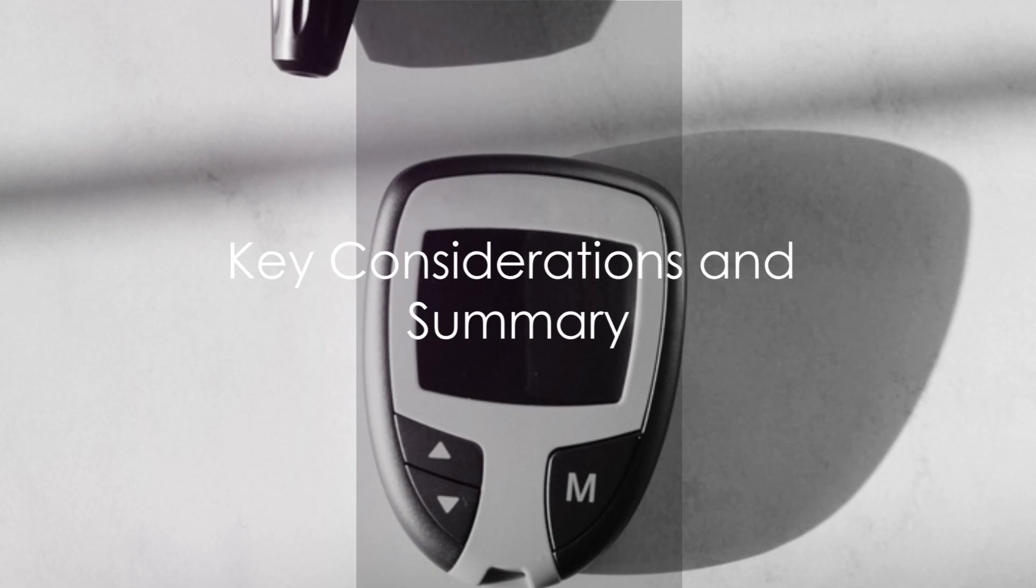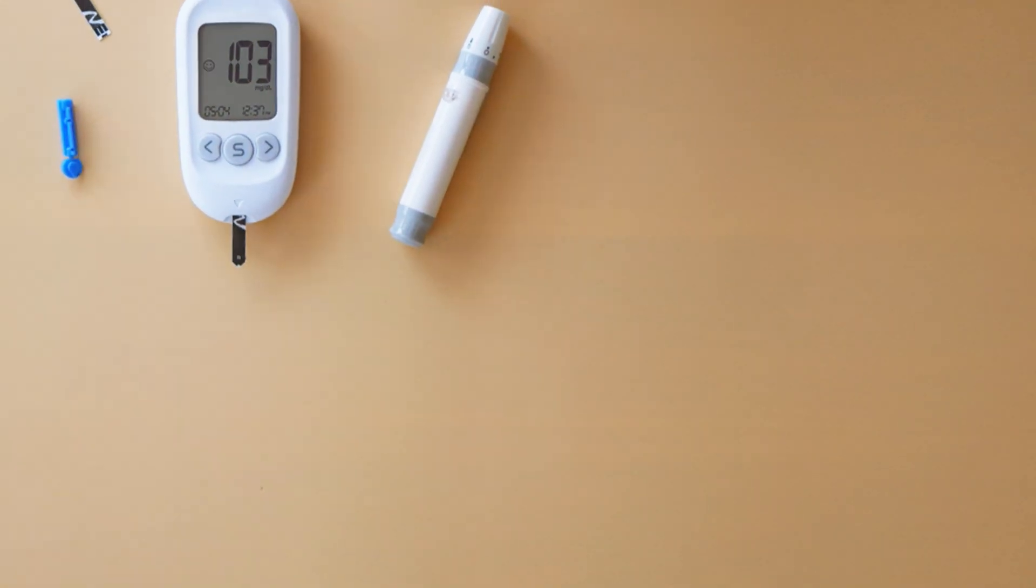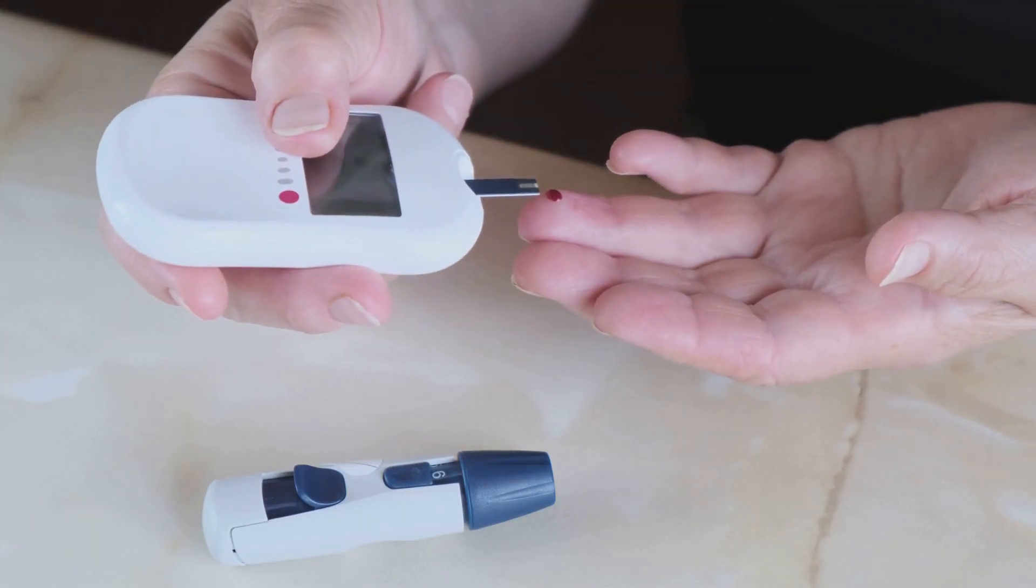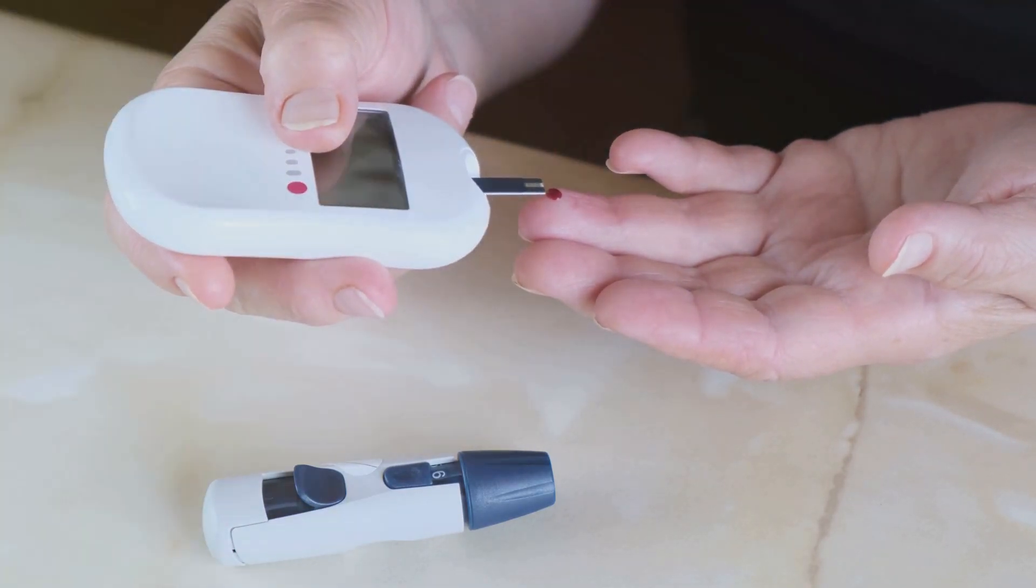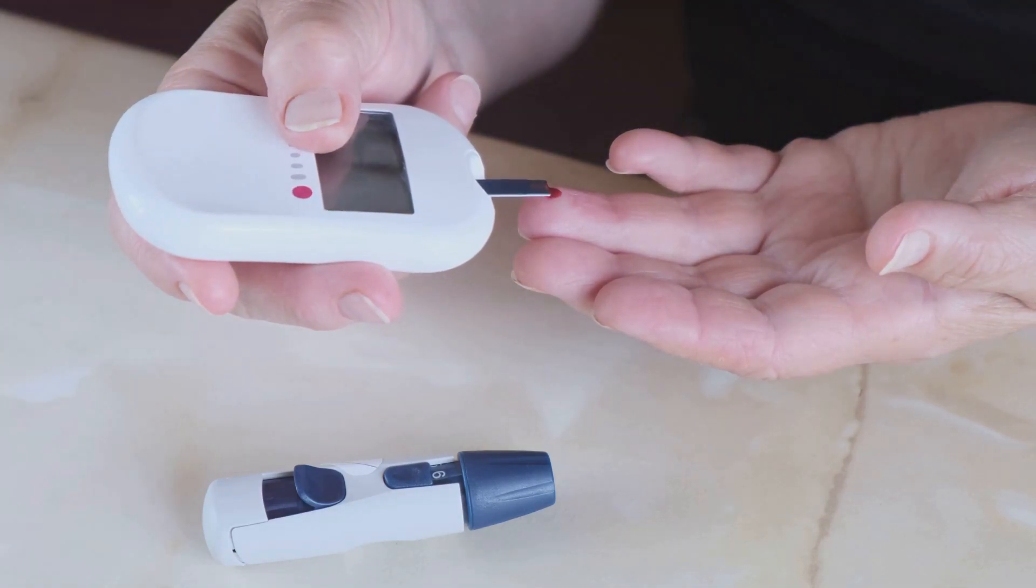Now that we've covered the methods, let's discuss some key considerations. It's essential to remember that consistency is king when tracking insulin sensitivity. Whether you're measuring fasting blood glucose, waist circumference, or using a continuous glucose monitor, aim for consistent conditions to ensure your data is as accurate as possible.